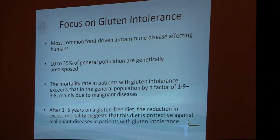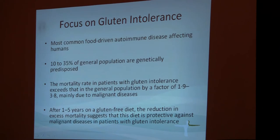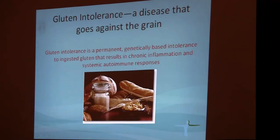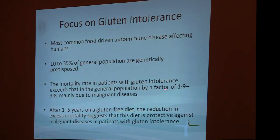Now let's talk specifically about gluten. Gluten intolerance is the most common food-driven autoimmune disease. Approximately 10 to 35 percent of the general population are genetically predisposed to gluten intolerance, meaning they carry specific genes which make them gluten intolerant. If we look at the mortality rate among patients who have gluten intolerance, it's approximately 1.9 to 3.8 above the mortality rate of the general population.